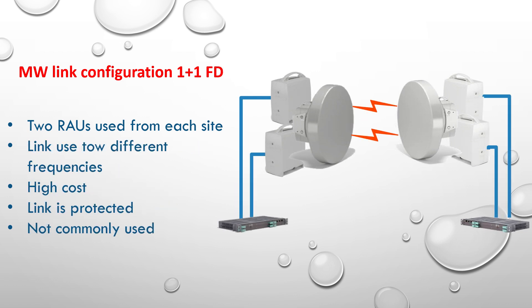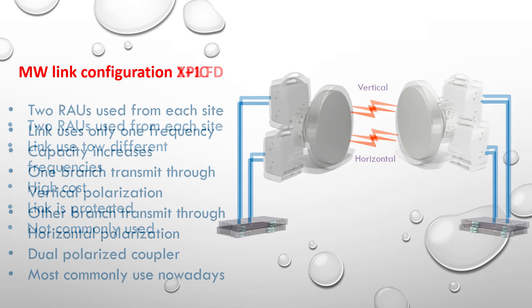Another configuration type is 1+1 FD, which stands for frequency diversity. This type is not commonly used nowadays because the link is configured with two frequencies, and this is not recommended by mobile operators since the operator has to pay more for two frequencies instead of one. This type can be used for microwave links serving a VIP site, because if any external interference affects one frequency and causes disturbance in that branch, the other frequency will work normally. However, as mentioned, this is an expensive solution because of working with two different frequencies.